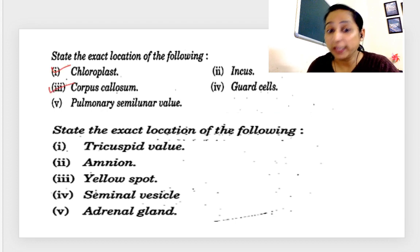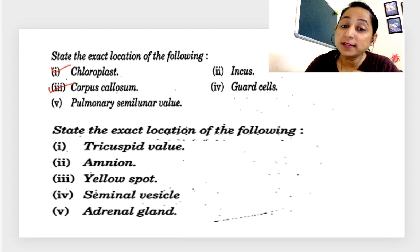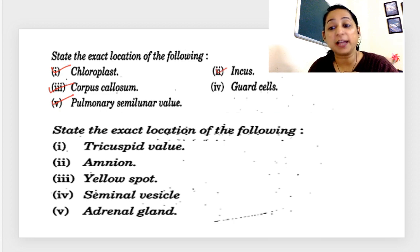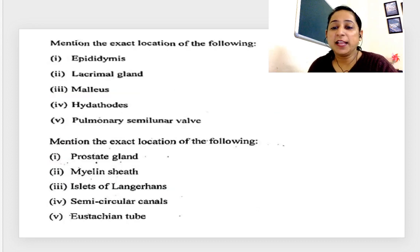Amnion, not repeated but yes it's there. Monocytes, type of WBCs. I'm sorry, I'm giving the answers also. You have to write your answers. State the exact locations of the following again: chloroplast we have done, corpus callosum we have done. There is repetition because they will give you the same, so if you write all you will be able to do all.